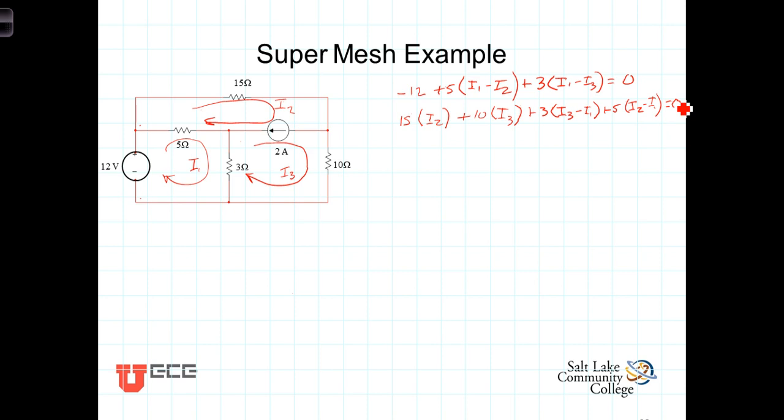And finally, the third equation we need for these three unknowns comes from the relationship between I2, I3, and this current source. In this case, I2 is going in the direction of the current source, so we're going to have that I2 minus I3, which is the current going through that branch in terms of the mesh currents, is going to equal 2 amps.